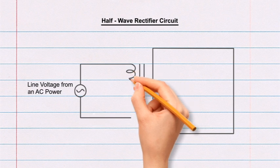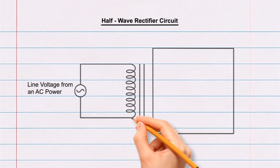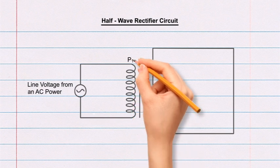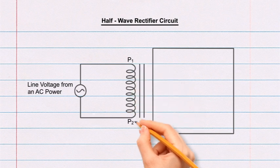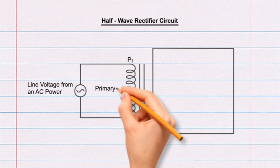Rub off the right vertical line of the smaller rectangle and draw a spring connecting the ends of the rectangle. Label the top end as P1 and the bottom end as P2. P1 and P2 represent the primary windings. Label the smaller rectangle as primary.